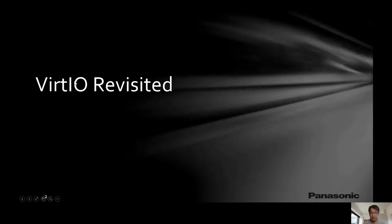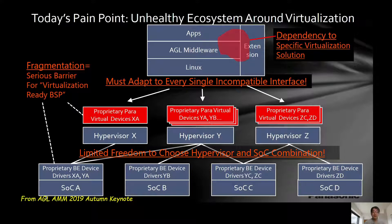First, I would like to briefly update on Bird.io, which I presented and proposed at the last all-members meeting in Monte Carlo. This page is from my last presentation and shows the current pain point around virtualization in automotive. The virtual device driver layer and even part of the platform layer itself depend on both hypervisor and SOCs. This is undesirable fragmentation and we don't have enough freedom of choice of technologies. It's unhealthy from an ecosystem point of view.